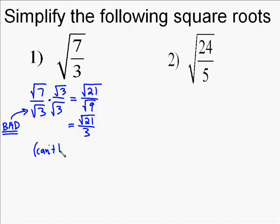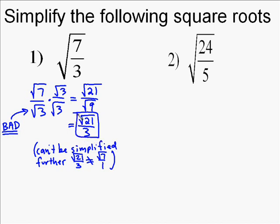Square root of 7 times square root of 3 is square root of 21. Square root of 3 times square root of 3 is square root of 9, and we know the square root of 9 is 3. Now notice that I can't factor this any further. 3 can't go into 21 because square root of 21 and square root of 3 are not the same thing. They're two totally different things. So your final answer is the square root of 21 over 3.